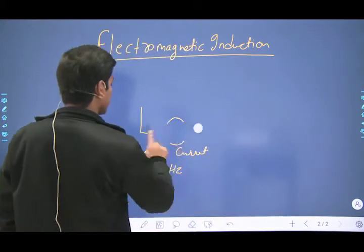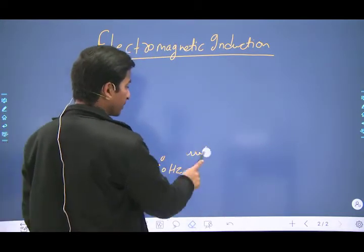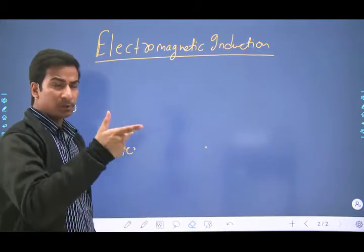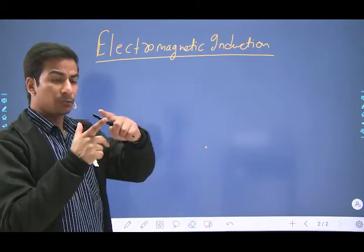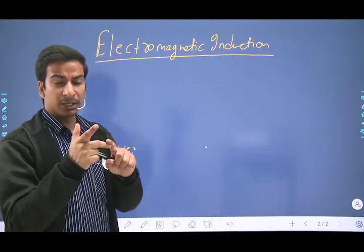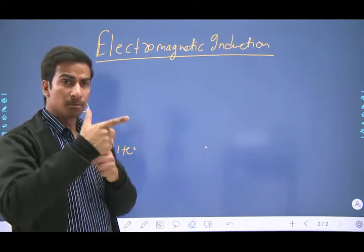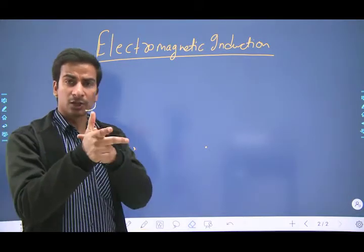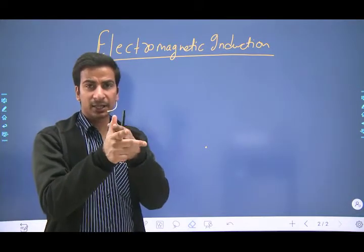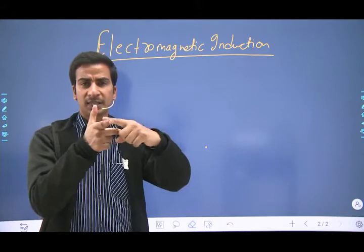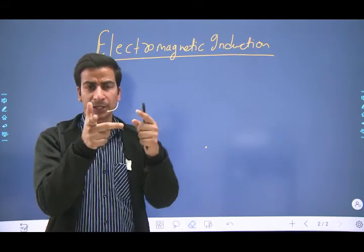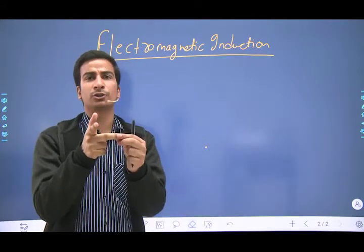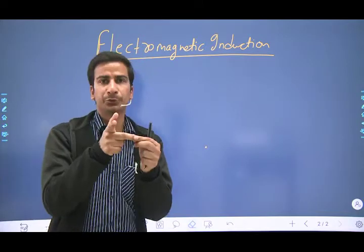In Fleming's Right Hand Rule, you have to spread your right hand fingers — the first finger, the middle finger, and the thumb — perpendicular to each other in such a way that the thumb represents the direction of motion, the first finger represents the direction of magnetic field, and then the middle finger will represent the direction of induced current.